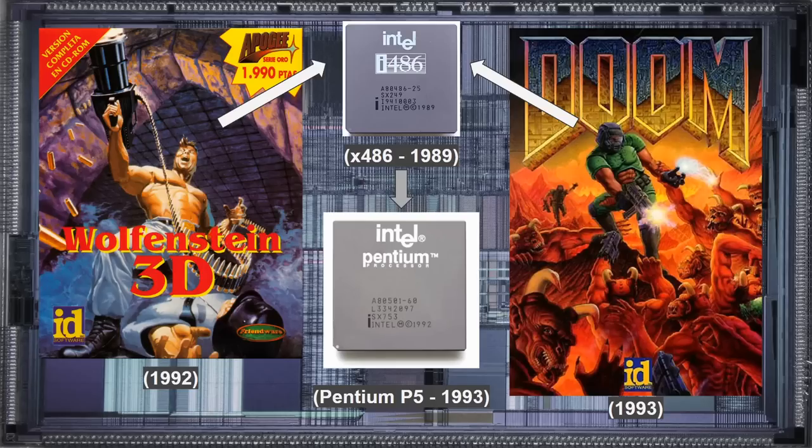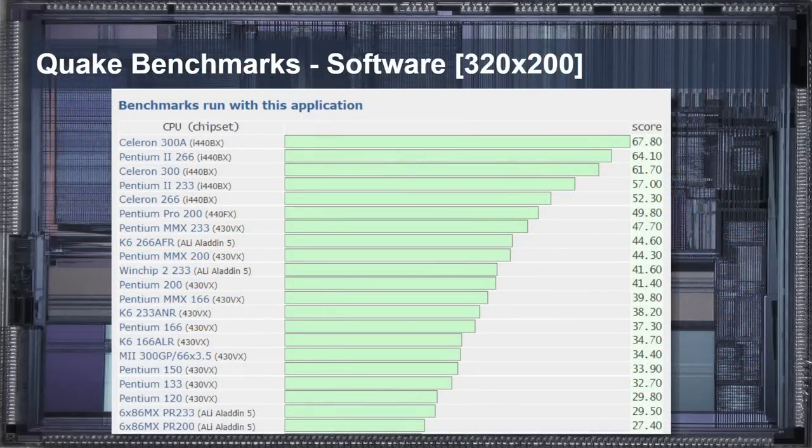Given that development of their next title likely began around 1994, their only option going forward was Intel's recently released Pentium processor. The processor boasted substantial performance improvements over the 486, and they would need to utilize every ounce of it. The optimizations used really paid off, as can be seen in the Quake benchmark. These numbers are in frames per second for 320x200 software rendering.